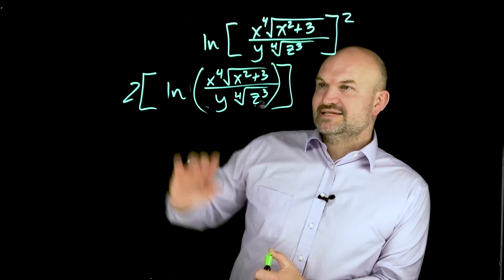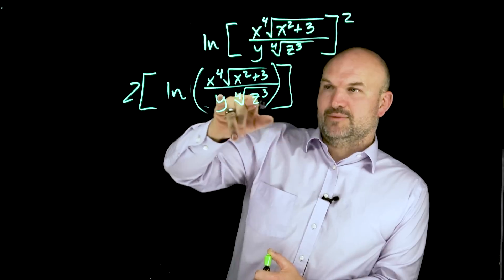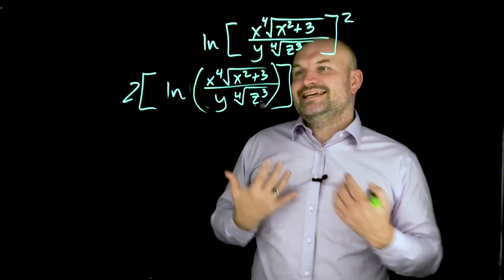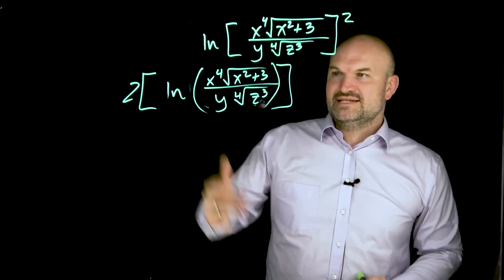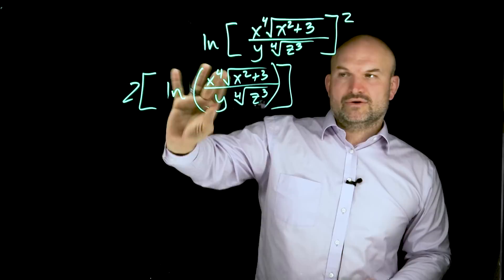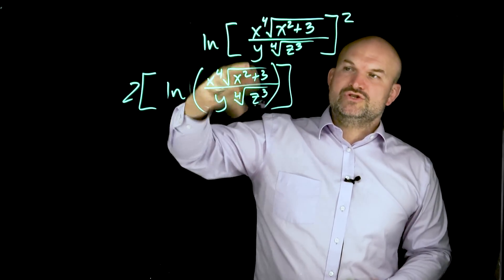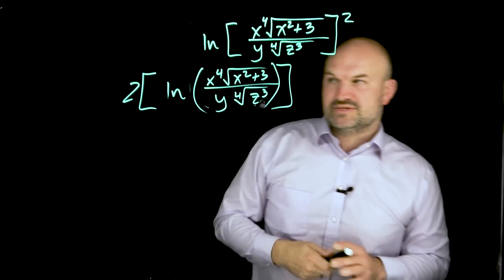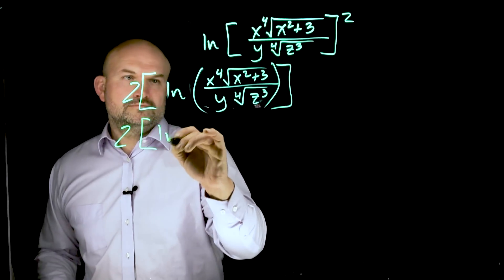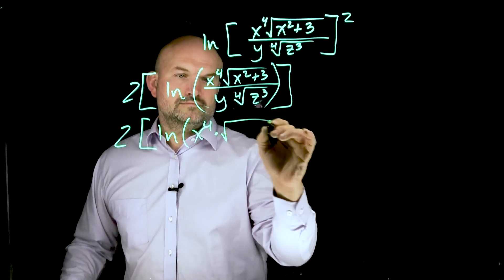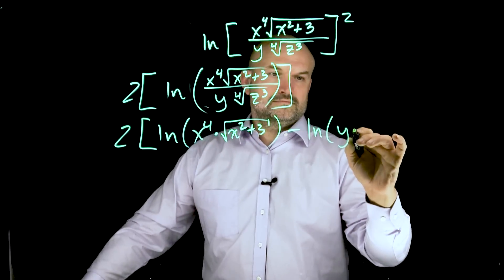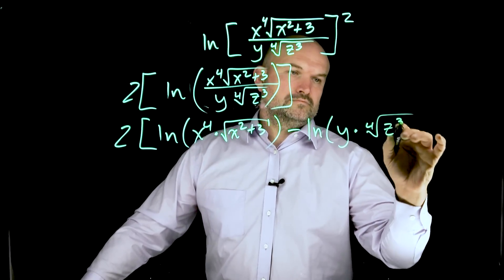Now what you guys can see is I have a product in my numerator, a product in my denominator, and then a quotient between the numerator and the denominator. So I think the easiest thing to do, as long as you're following parentheses, is to break up the quotient first. So remember, if we break up the quotient, I can rewrite this as a difference of two logarithms.